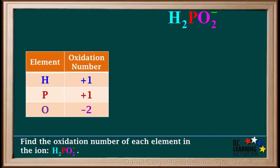So, we can now summarize by saying the oxidation number of hydrogen in this ion is positive 1. The oxidation number of phosphorus is also positive 1. And the oxidation number of oxygen is negative 2.